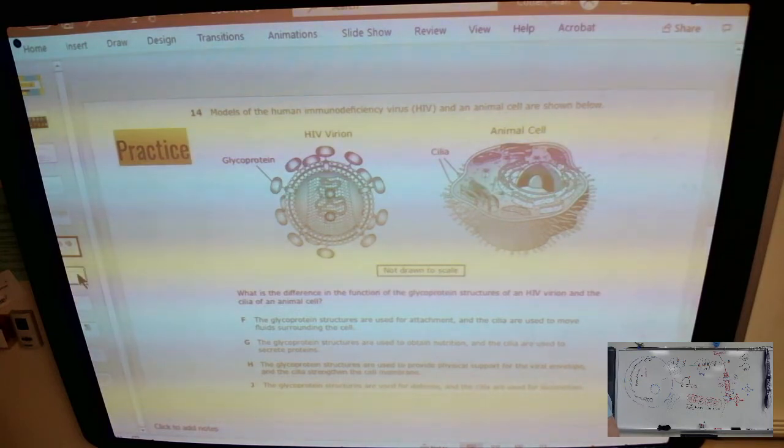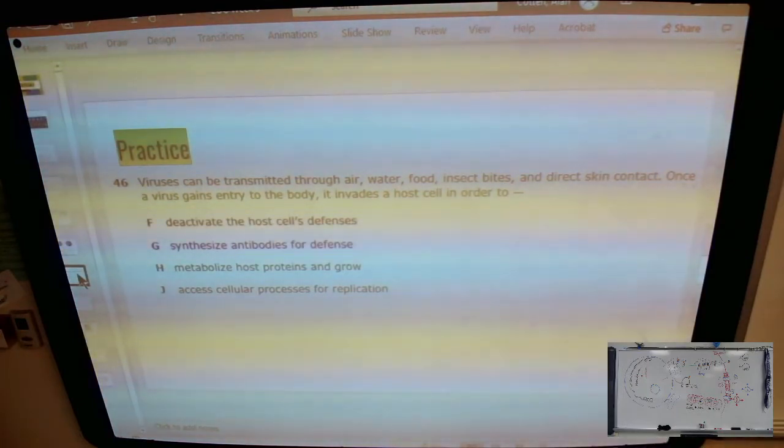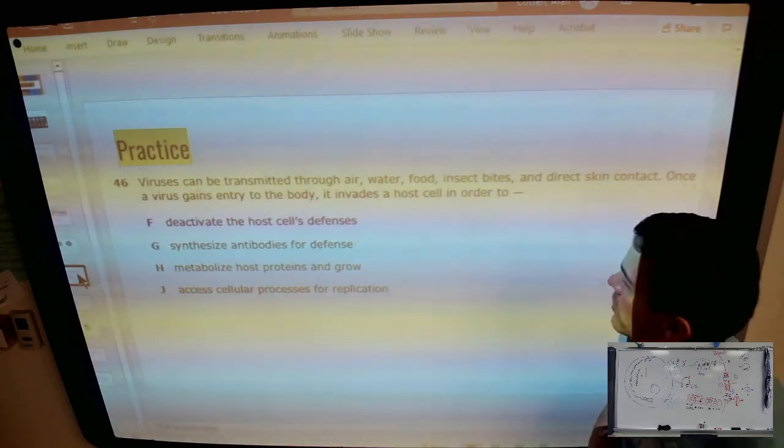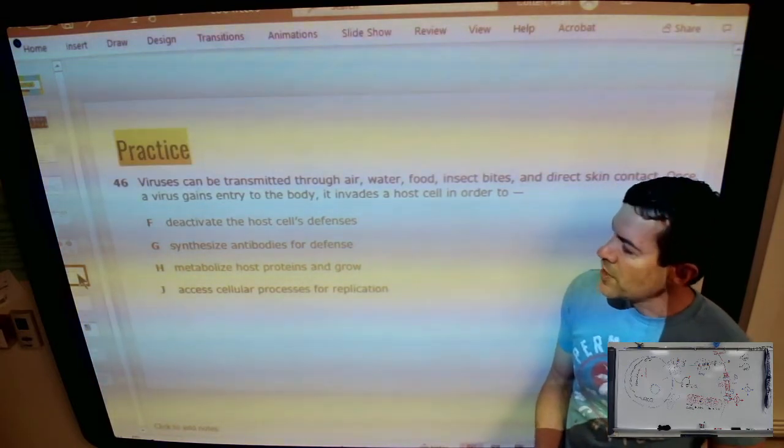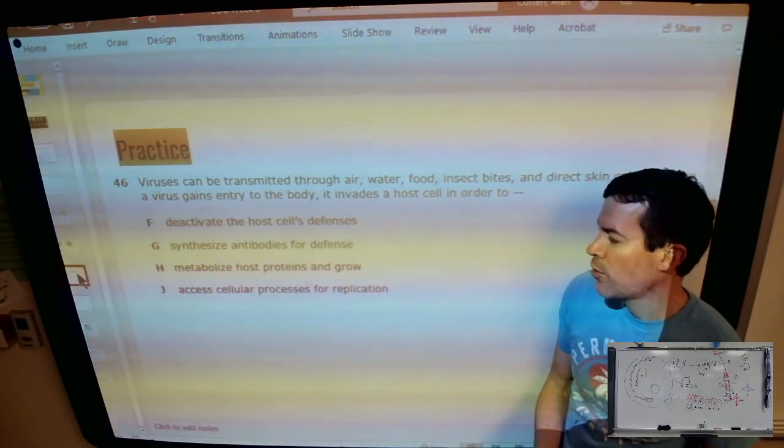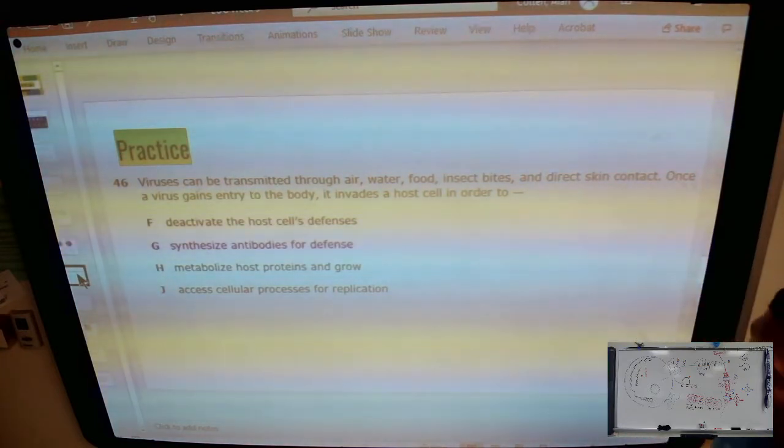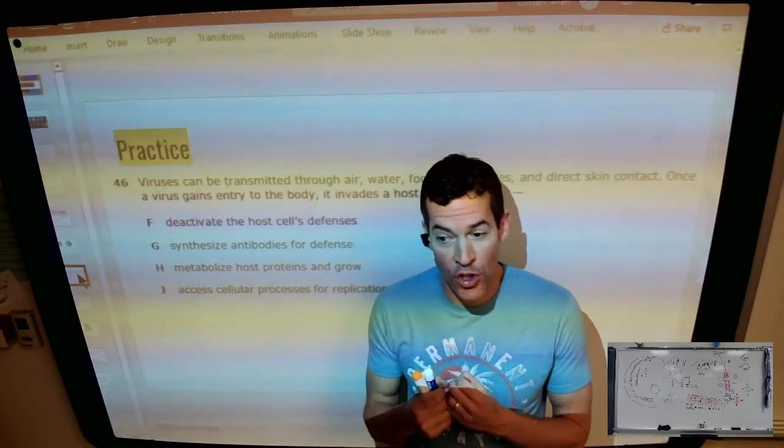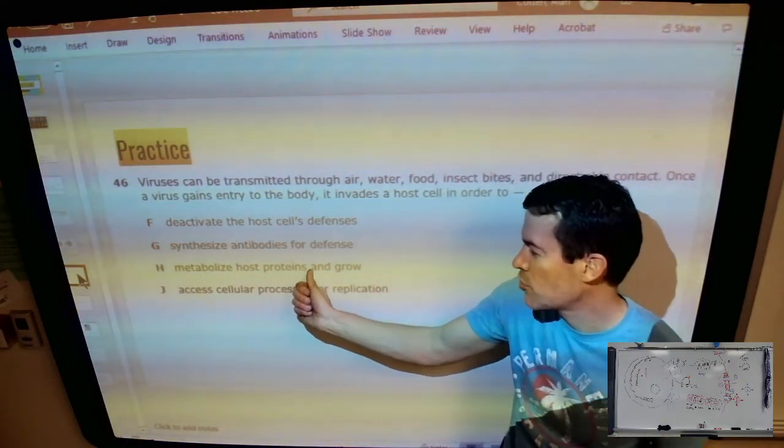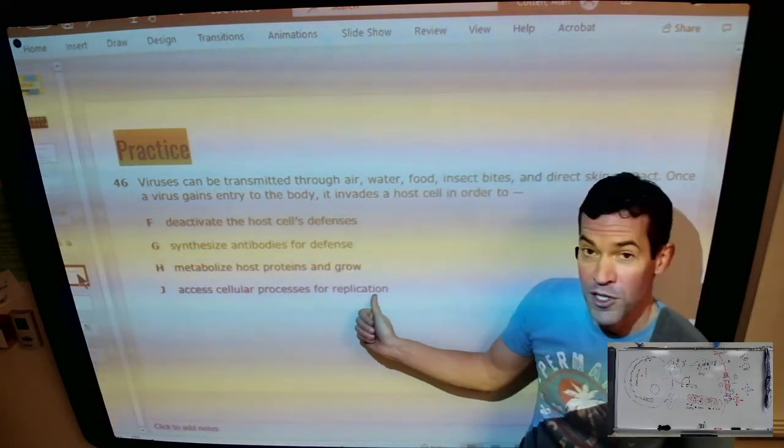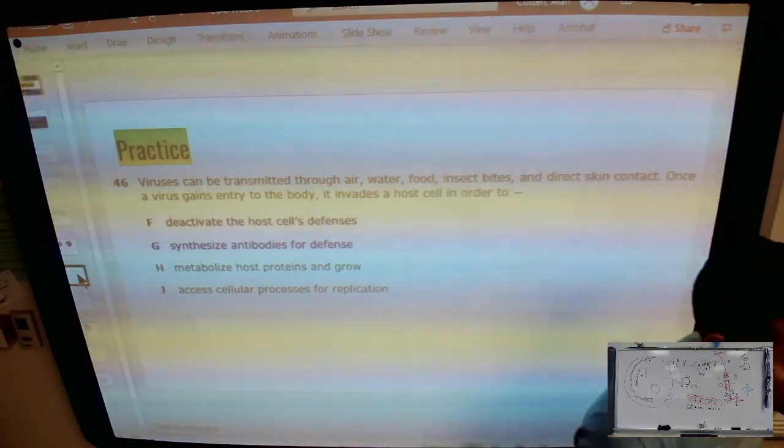Let's see what we have next. Viruses can be transmitted through air, water, food, insect bites, and direct skin contact. Once a virus gains entry into the body, it invades a host in order to, so take a second, do you think it's deactivate the host cell's defenses, synthesize antibodies for defense, metabolize host proteins and grow, or access cellular processes for replication? So a virus, we consider it non-living because it can't do anything on its own. It's just code. So it's not really running its own metabolism. It's not metabolizing host proteins, but it can access cellular processes for replication. It basically says, here's the code, cell, you make copies of me. So the right answer is access cellular processes so that it can replicate.